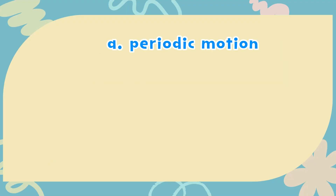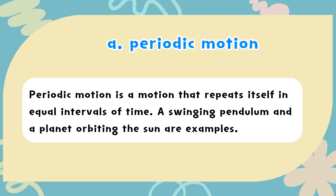The correct answer is A: Periodic motion. Periodic motion is a motion that repeats itself in equal intervals of time. A swinging pendulum and a planet orbiting the sun are examples.